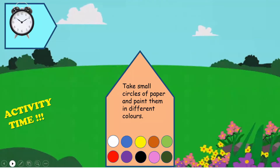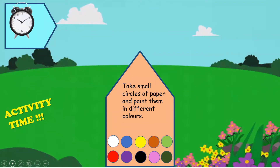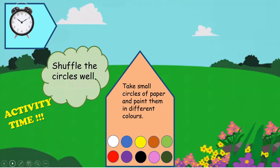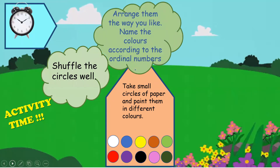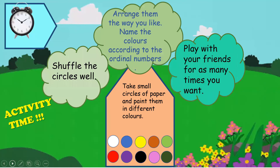What's next? It's time for some activity! Take small circles of paper and paint them in different colors as shown here. Shuffle the circles well and arrange them the way you like. Name the colors according to the cardinal numbers.